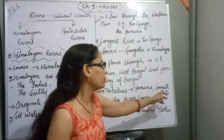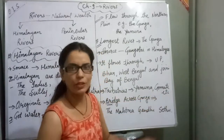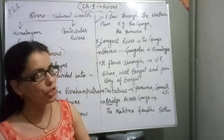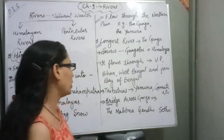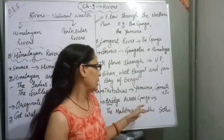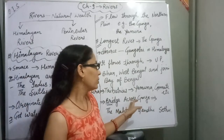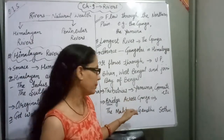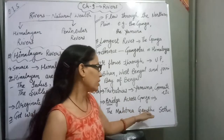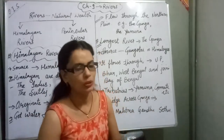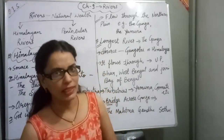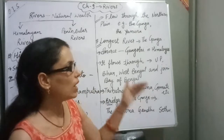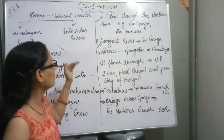Tributaries like Yamuna and Gomti join the Ganga. There is also a bridge — called the Mahatma Gandhi Setu — which we have studied.